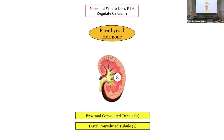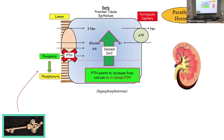Let's focus on the kidney. PTH does two different actions in the proximal convoluted tubule and one in the distal convoluted tubule. What does it do in the proximal convoluted tubule? It interferes with the sodium-phosphate pump — that's an ATPase-dependent channel. So PTH decreases phosphate absorption, causing phosphaturia.